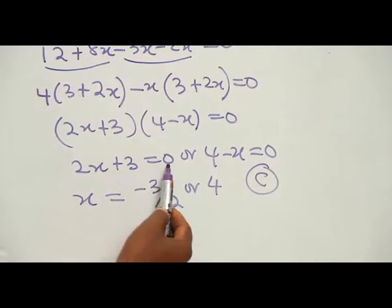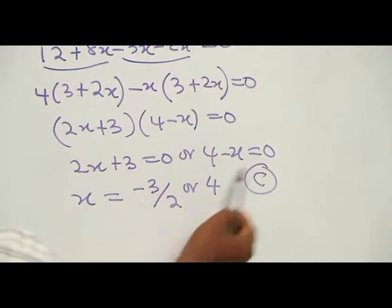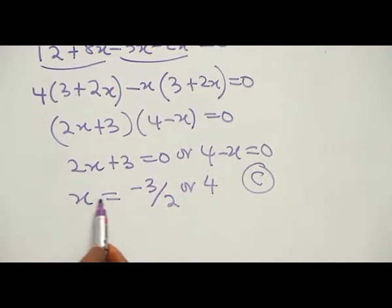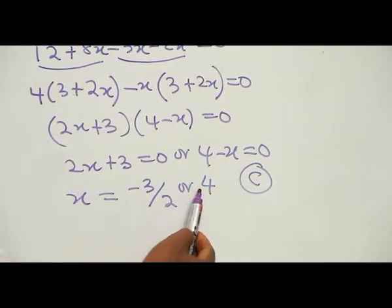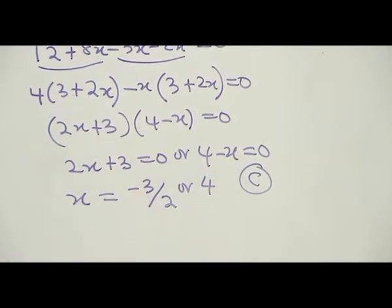It means that 2s + 3 = 0 or 4 - s = 0. Solving for s, we have s equals -3/2 or 4. Option C is the correct answer.